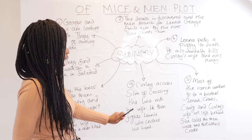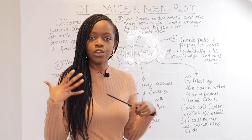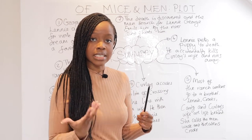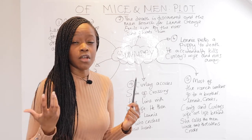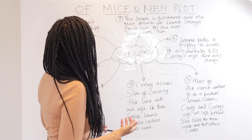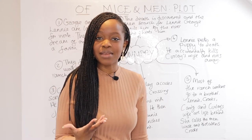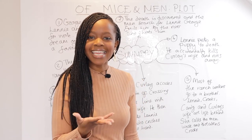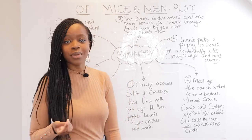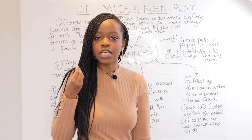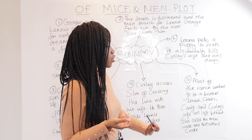The fourth major event is that Curly accuses Slim — the other ranch hand, the jerkline skinner, who is quite powerful — of crossing the line with his new wife. Curly is constantly insecure that his wife is drawn to Slim. Because he knows he cannot pick a fight with Slim, who is taller and more powerful, Curly ends up picking a fight with Lennie instead, who ultimately crushes his hand — a very humiliating defeat for Curly.